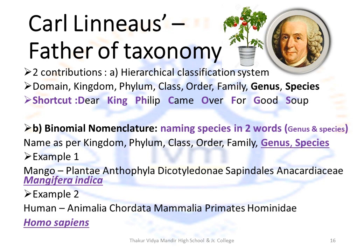He also gave us binomial nomenclature, which means we can name species in two words using the genus and the species. If we follow the hierarchical classification system for mango, the scientific name would be: Plantae, Anthophilia, Dicotyledona, Sapindalis, Anacardiae, Mangifera indica. But using binomial nomenclature, we can simply remember the mango's scientific name as Mangifera indica.